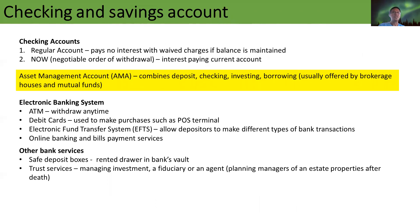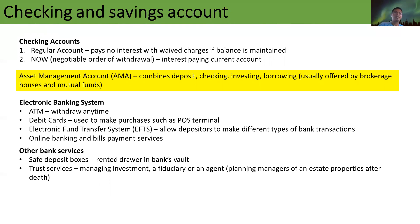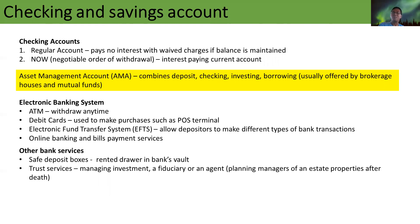Moving on to checking accounts: a current account and a checking account mean the same thing. There are two types of checking accounts — regular accounts and the Negotiable Order of Withdrawal, or NOW accounts. The difference is that in a regular account there is no interest and no charges as long as you maintain the balance requirement. A NOW account is an interest-paying current account, but of course there is a balance to maintain. If your account falls below the minimum required balance, that's when charges apply.